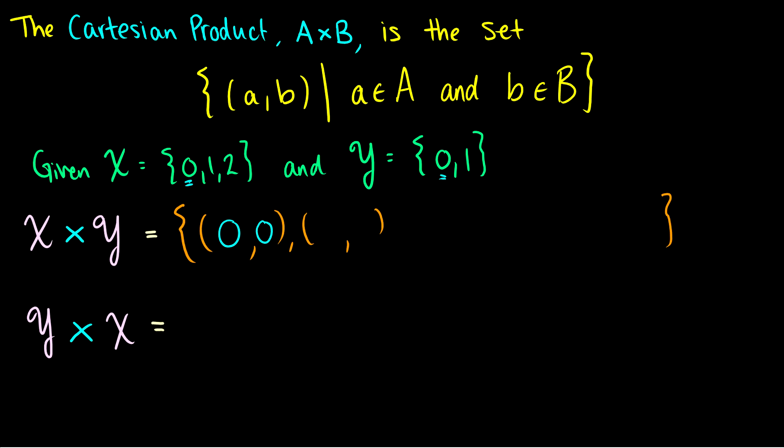Now in the next one, we can take 0 from X again, but then we can take 1 from Y. And we can keep doing this. We try to make every single pair that we possibly can. So for instance, now we can take X as 1, Y as 0, X as 1, Y as 1. Now we can move on to the 2.